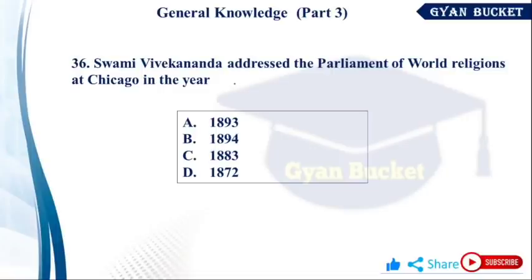Swami Vivekananda addressed the Parliament of World Religions at Chicago in which year? The World Parliament of Religions at Chicago — Swami Vivekananda gave a famous speech there. The conference was held in 1893, and Swami Vivekananda represented India.